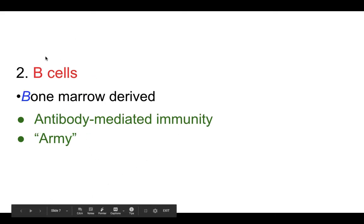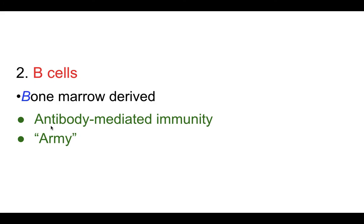The second kind of white blood cell are B cells, called B because they're made in the bone marrow. They produce antibody-mediated immunity. In my mind, they're the Army — because when I think of the Army, I think of guns. B cells don't do hand-to-hand combat; B cells carry guns, and those guns shoot antibodies. Their bullets are antibodies, and they fight antigens. Antigens are the proteins on the cell membrane of any kind of pathogen.